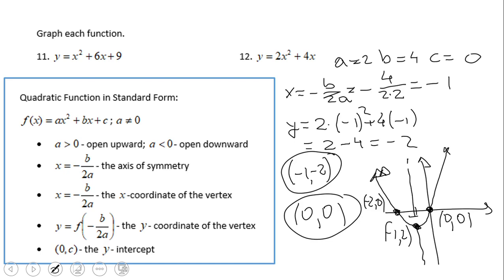And this is number 12. A is 2, b is 4, c is 0. So be careful that c is 0. And we have x equals negative b over 2a. That will end up with negative 1. Replacing this in the equation, we'd end up with a y of negative 2. That gives us the vertex. Also, we have the axis of symmetry, and we are able to do the graph by plotting one more point, which is 0 and 0.